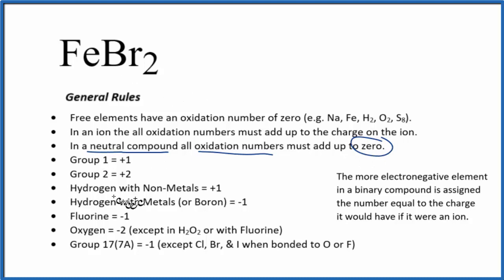We won't find iron in our rules. It's a transition metal, so it can have different oxidation states depending on what it's bonded to. As we go down though, bromine, that's in group 17, sometimes called 7A. So it'll have a minus 1 oxidation state, with a few exceptions. So we have minus 1 for each of those bromine atoms.